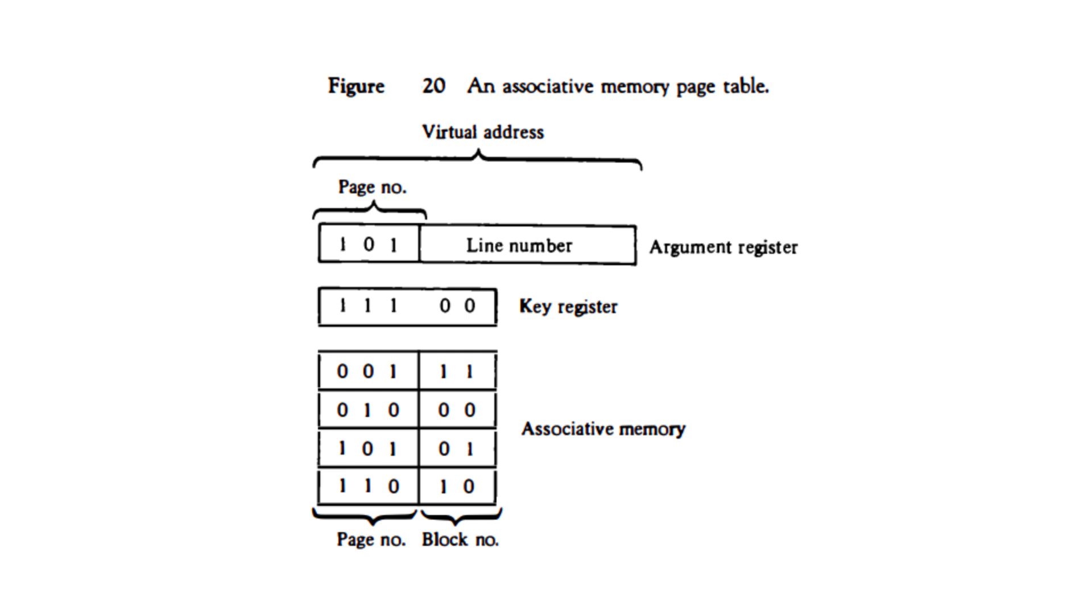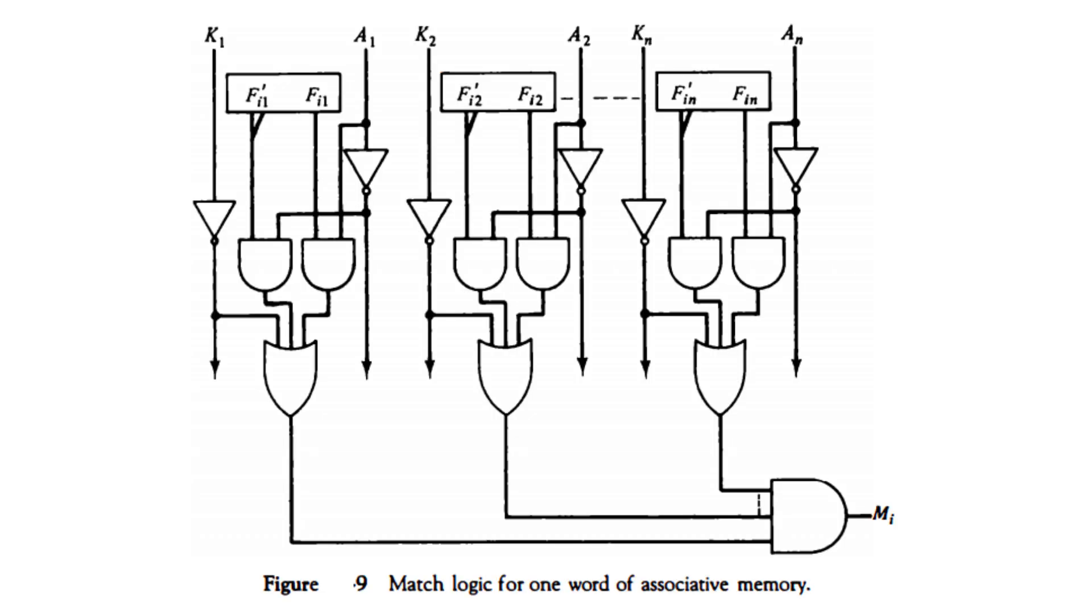Now we'll see how the match logic actually works. The match logic for each bit can be implemented using a simple XOR gate, an AND gate, and an inverter. The output of the XOR gate tells us if the argument register bit and the memory bit are the same.